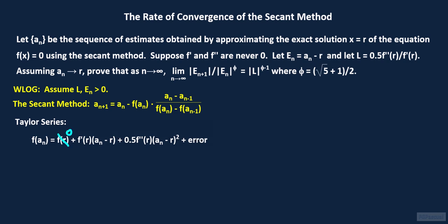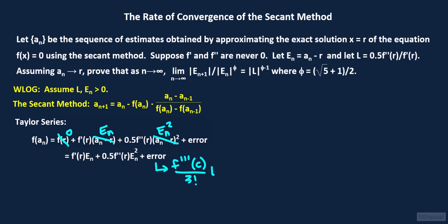f of r equals 0 since x equals r is the root of the equation f of x equals 0. So f of a sub n equals f prime of r times e sub n plus 0.5 f double prime of r times e sub n squared. The error term given by the Taylor series formula equals f triple prime of some value c divided by 3 factorial times the cube of e sub n, where c is some value between a sub n and r.